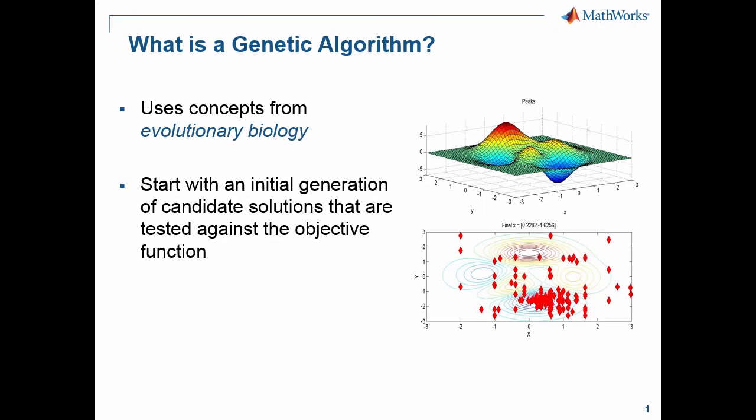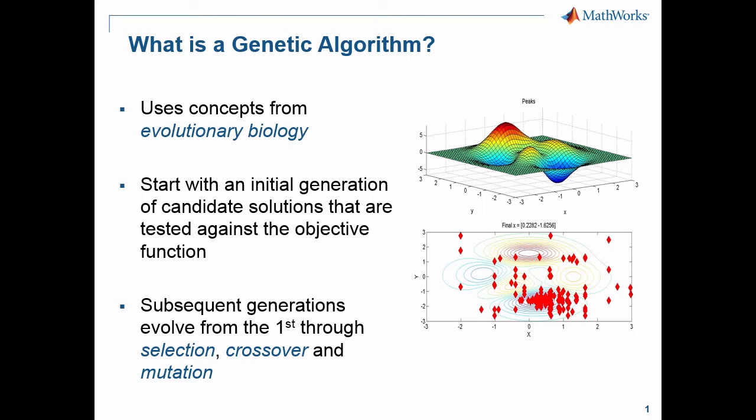Genetic algorithms work by starting with an initial generation of candidate solutions that are tested against the objective function. We then generate subsequent generations of points from the first generation through things such as selection, crossover, and mutation.